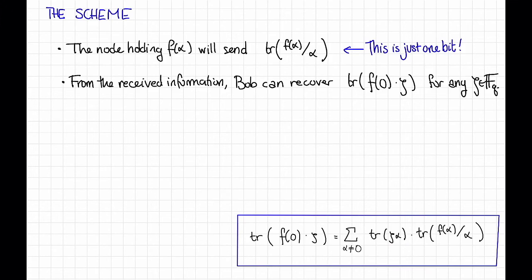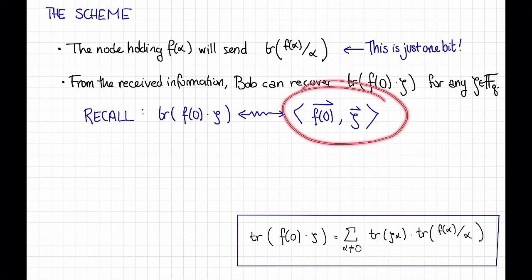Why is this useful? Well, let's recall our view from the previous video of the trace as kind of like an inner product on vectors. That is, we can view the trace of f of 0 times zeta as the inner product of some vector version of f of 0, so that's a little vector in f2 to the t, with the vector version of zeta. In particular, if Bob can get this inner product for any zeta he likes, then he can quite easily recover the vector version of f of 0 from which he can recover f of 0.